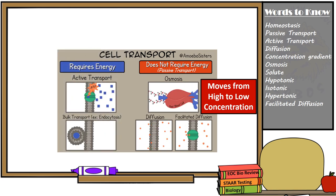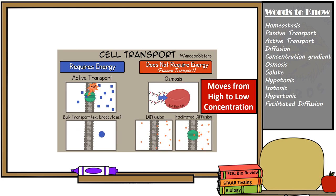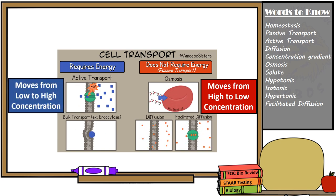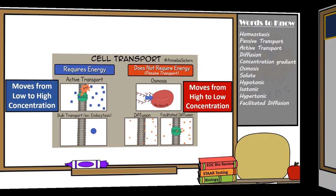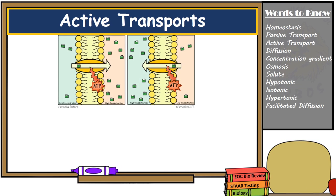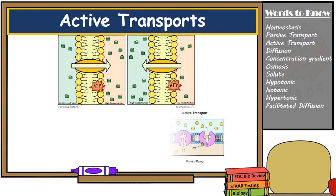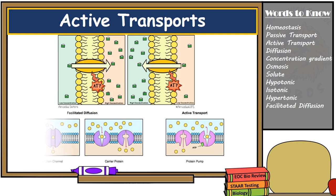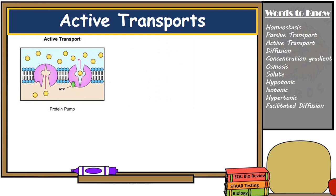Now let's look at active transport because, unlike passive transport, active transport does require energy to move materials across the cell membrane — specifically because it moves them against the concentration gradient, meaning from low to high concentration. Moving material against the concentration gradient requires energy and makes use of proteins in the cell membrane known as active transport proteins. In active transport, the substance being transported binds to the protein and is transported only when ATP — a form of energy — is also bonded to the protein.